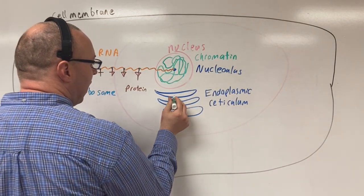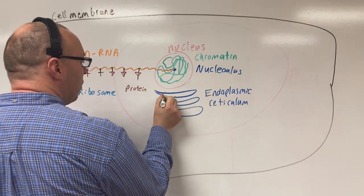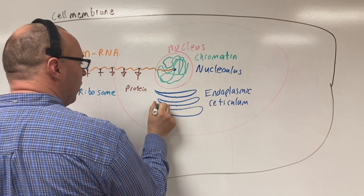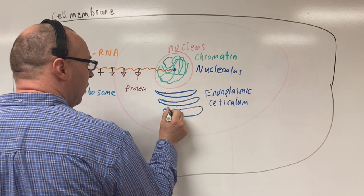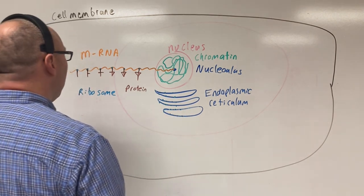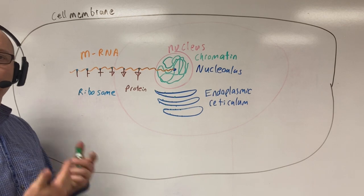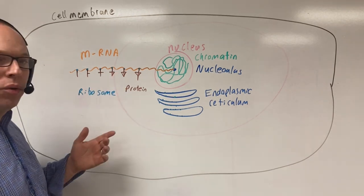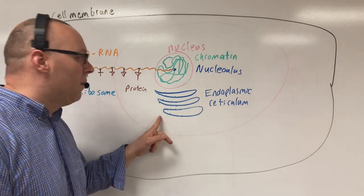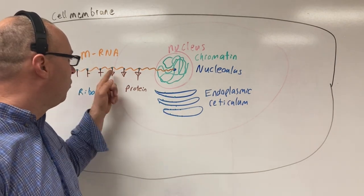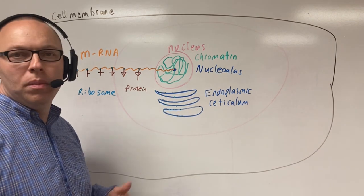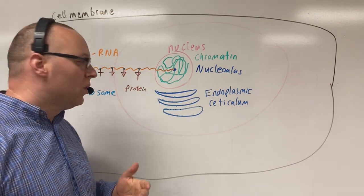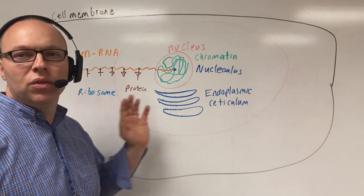The next structure — I'm going to put the same dots I used for mRNA over here on the endoplasmic reticulum. Remember those dots were ribosomes that allowed us to read mRNA and make proteins. When I have those ribosomes on my endoplasmic reticulum, I call this the rough endoplasmic reticulum, and this is important for making proteins for export.